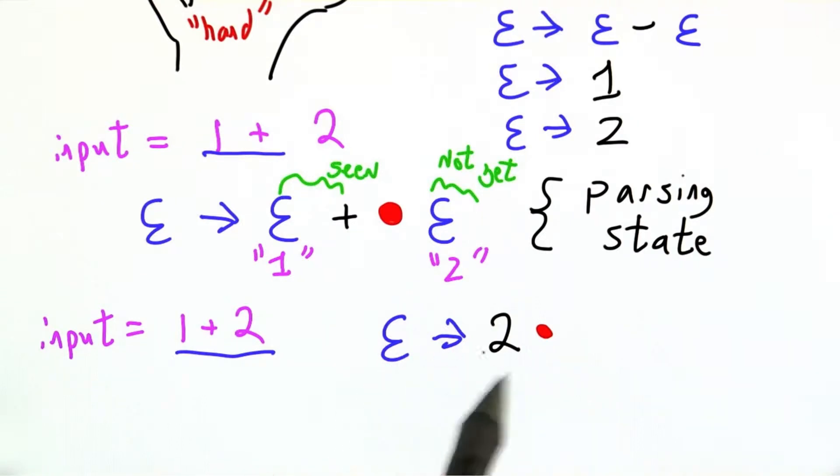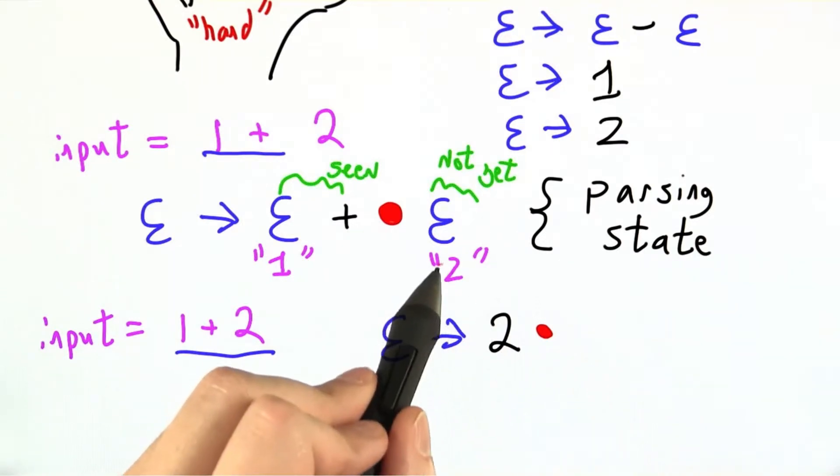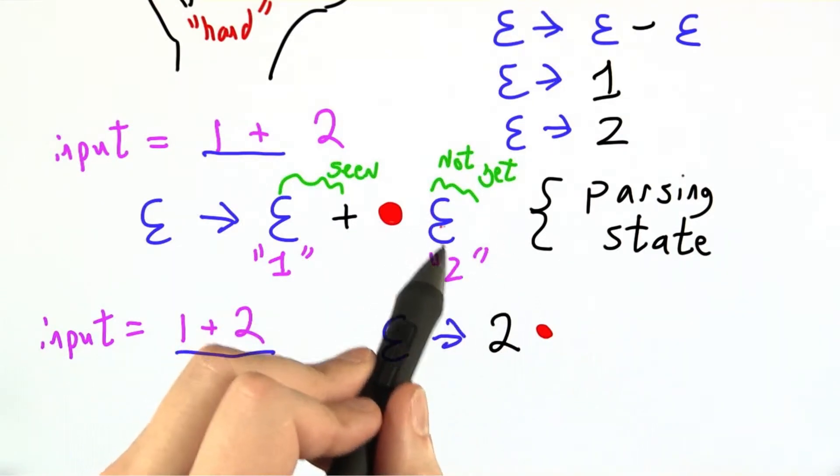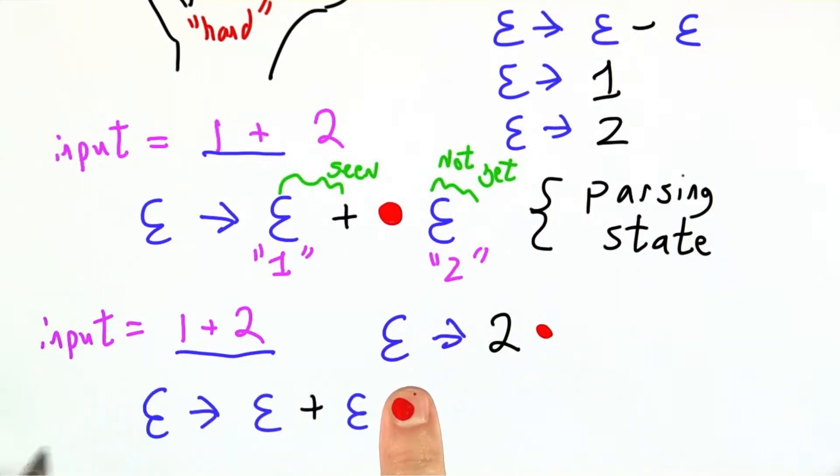So conceptually we can use this rule, this rewrite rule, e goes to 2, like we hinted at here with the purple text, and we will also be here. e goes to e plus e, but we've already seen the e, the plus in e, e plus e.